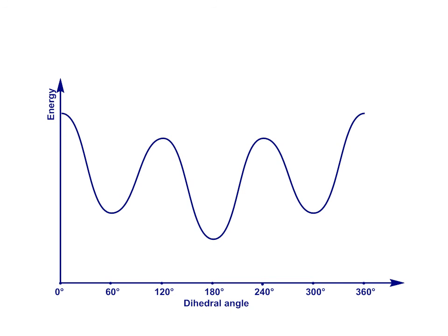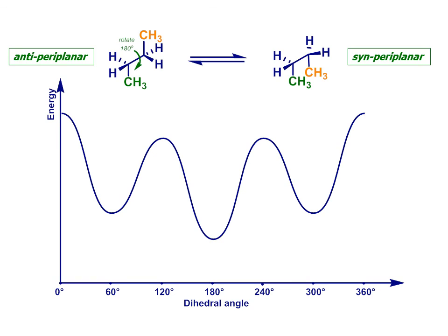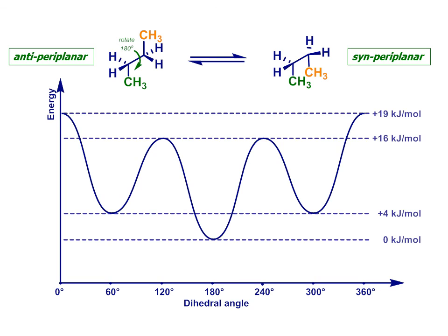Note that these are again fairly small energy differences. The overall energy difference between the least stable synperiplanar geometry and the most stable antiperiplanar is less than 20 kilojoules per mole. And remind yourself that to break a carbon-carbon bond, we're needing close to 350 kilojoules per mole. These conformational effects really are rather subtle.